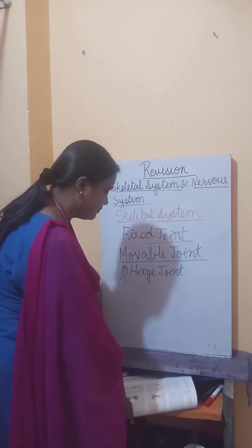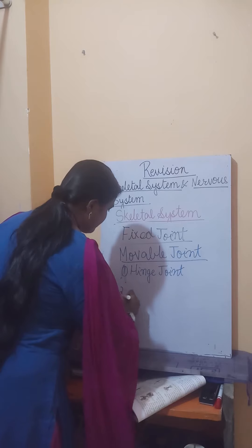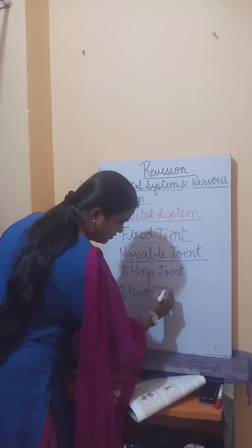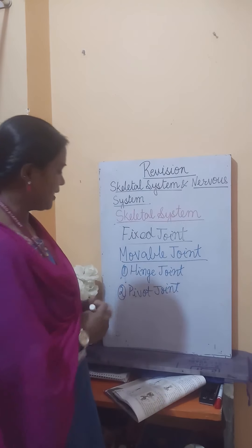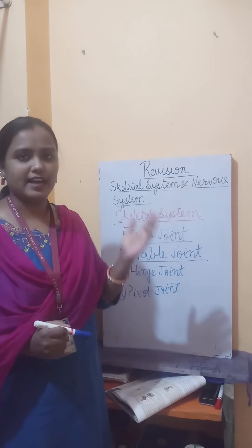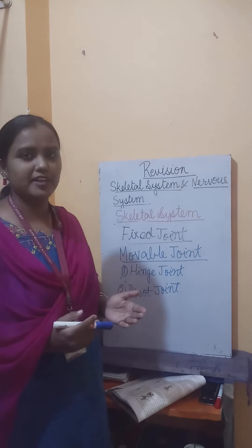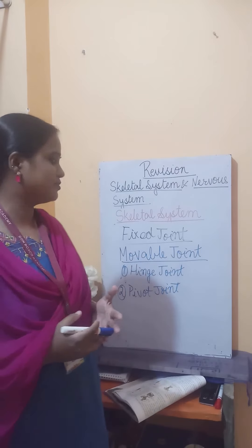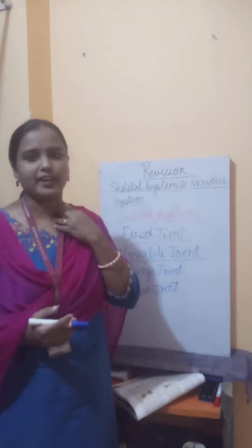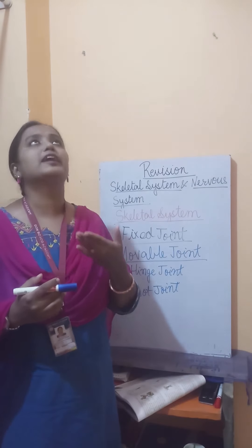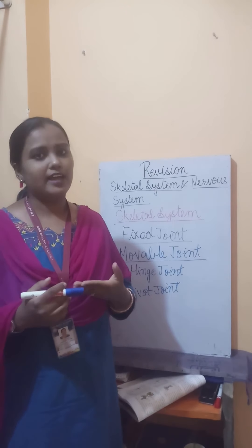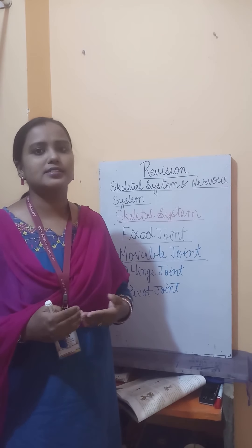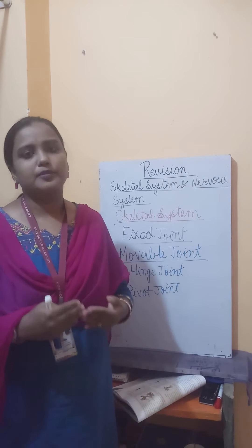The second type is the pivot joint. This type of joint allows movement sideways, upward, and downward. Pivot joints are present in our neck — that is why we are able to move our head up, down, and sideways. They are also present in our spine, which is why we are able to bend ourselves backward or downward.